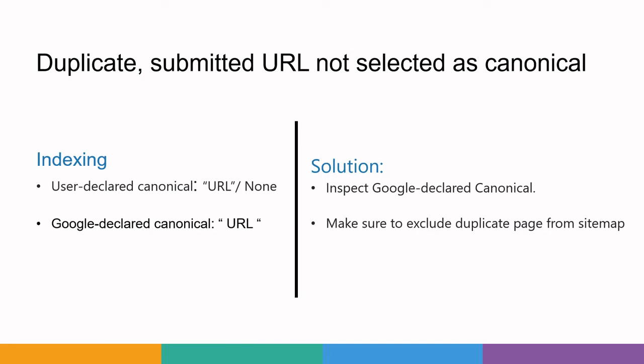The next issue is 'duplicate submitted URL not selected as canonical.' In this case, when you inspect that page in indexing, you will find either a user-declared canonical or a Google-declared canonical. By checking the source code you can understand what canonical URL is indicated on that page. Alternatively, you can use the search operator 'info:' followed by the particular URL to check which URL Google is taking as the original URL.